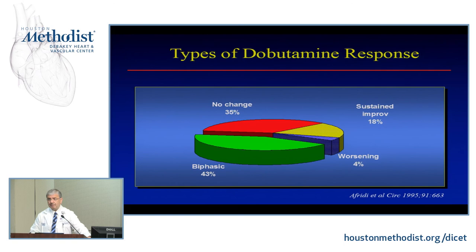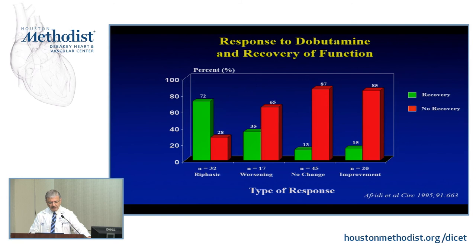If there is no ischemia induced at high-dose dobutamine, you might suspect that revascularization of that segment won't improve it, because ischemia is not part of the pathophysiology. Some segments show no reserve whatsoever — worsening at all doses. The predictive value of recovery of function depends on the type of response: biphasic has the highest positive predictive value, followed by sustained improvement, then worsening, and no change yields only about 10-15% likelihood of improvement.